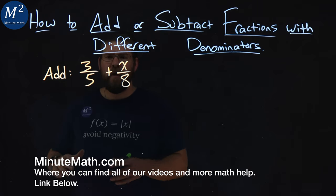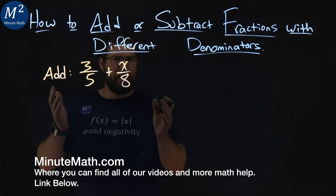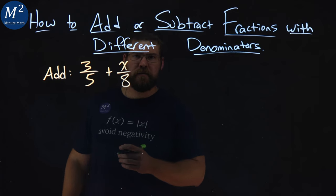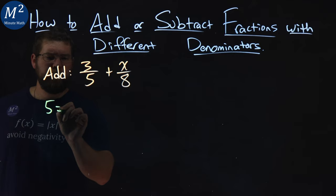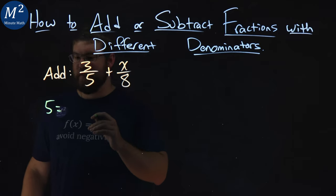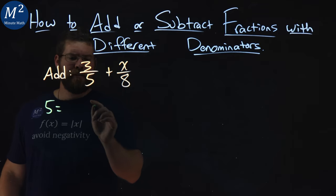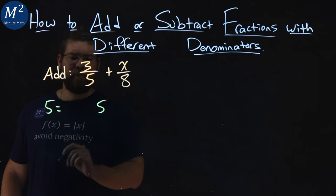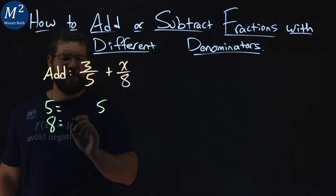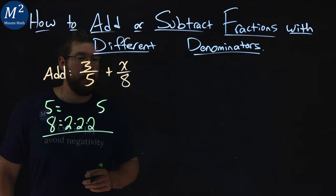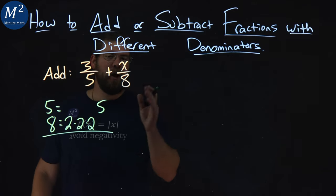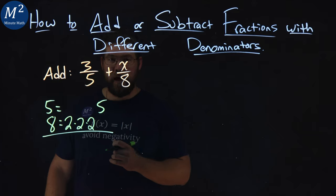Well, we want to find the LCD, least common denominator, of our two fractions. So let's break down the multiples of each one of the denominators. Five, or the factors of each denominator. Five just is a five. Eight is a two times a two times a two. And again, if you need help doing this part here, we have other videos on the least common denominator.